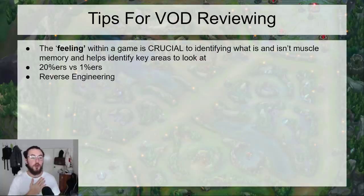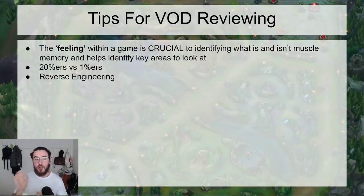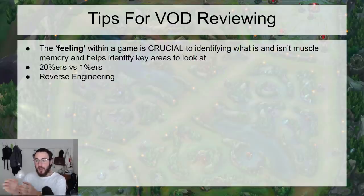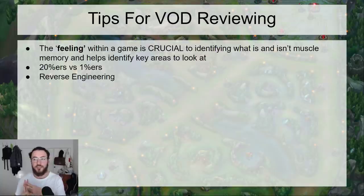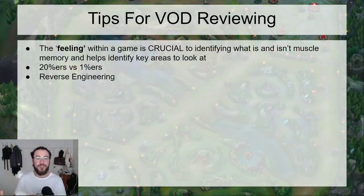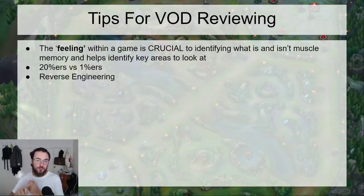Reverse engineering is a tactic I created to help identify how a certain set of plays actually occurred. What I'll do is go to a death — for example, my first death of the game — and then go backwards and ask: what led to this? Was it because I wasn't utilizing my vision trinkets? Was it because I didn't assess range properly? Was it because I wasn't jungle tracking? Was it because my mana conservation was poor? Rather than just watching the VOD linearly, reverse engineering lets you see a lot more clearly how that specific thing happened. And it works the same way when getting a kill — what led to this kill? It's a great way of identifying your strengths and weaknesses.